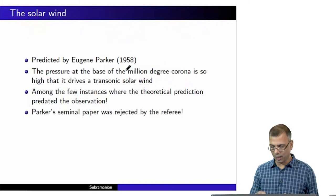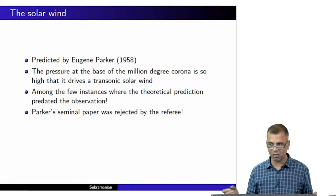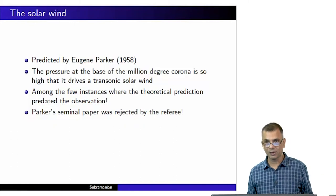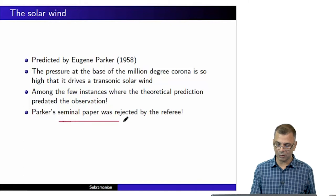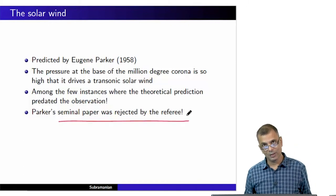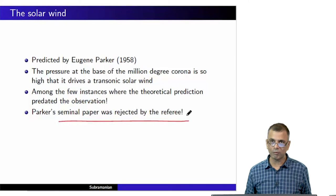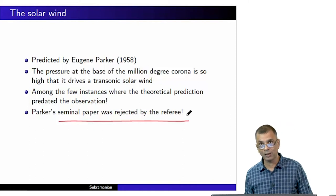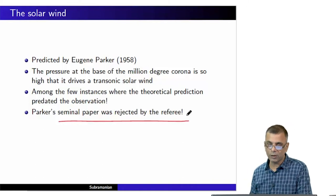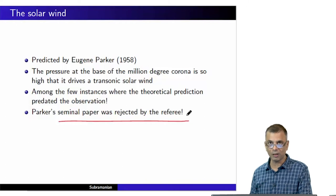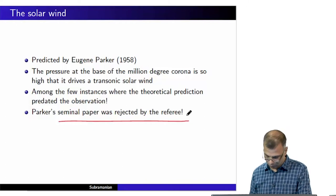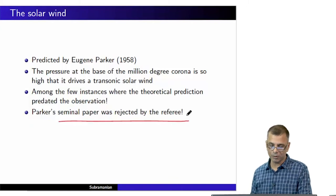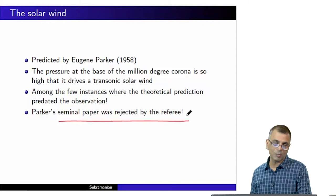This idea was so radical that it was thought to be wrong. Parker's seminal paper was actually rejected by the referee. It was only after a lot of give and take that Parker finally managed to have his paper accepted. And sure enough, a few years later the validity of his prediction was proved outstandingly right, and the solar wind was indeed observationally confirmed. This is quite a remarkable story.